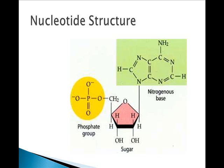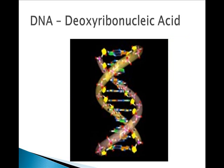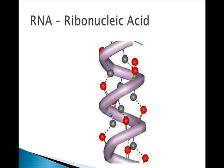The most familiar nucleic acid is DNA, deoxyribonucleic acid. The differences between DNA and RNA are: DNA is a double helix, RNA is single-stranded. DNA has thymine, RNA has uracil. And the five-carbon sugar differs — one has ribose and one has deoxyribose. Other than that, they're almost identical.